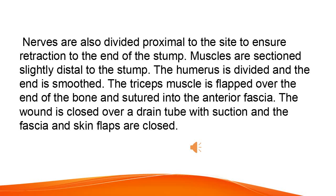Muscles are sectioned slightly distal to the stump. The humerus is divided and the end is smoothed. The triceps muscle is flapped over the end of the bone and sutured into the anterior fascia. The wound is closed over a drain tube with suction and the fascia and skin flaps are closed.